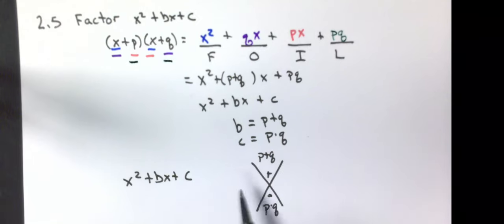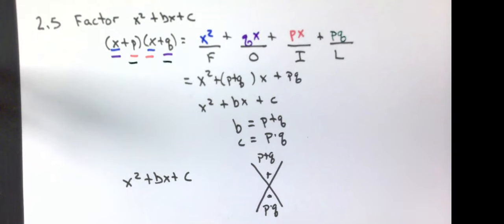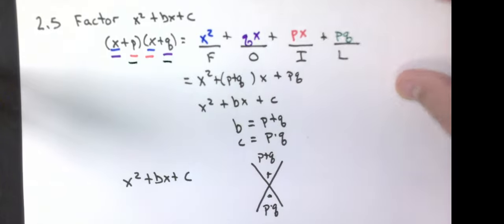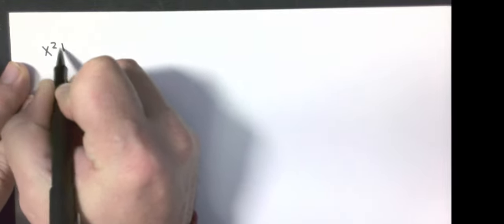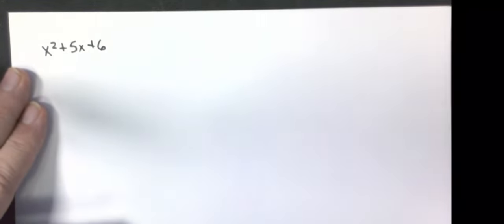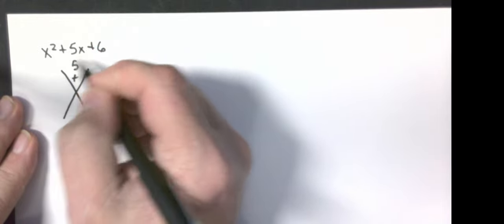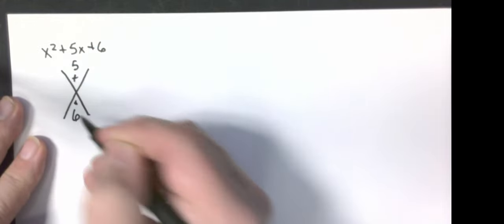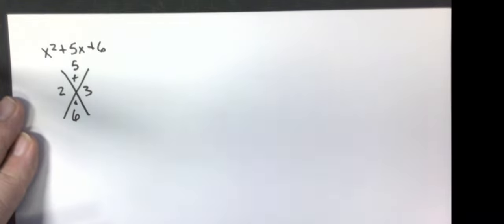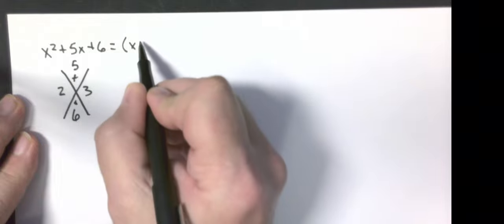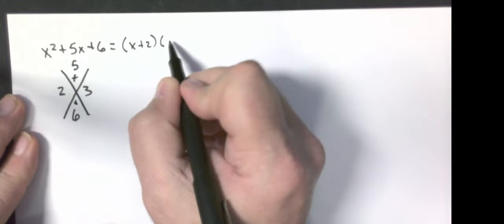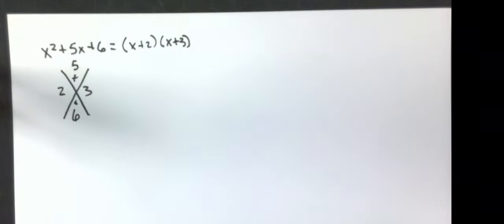I'm going to do about five or six examples. First example: x squared plus 5x plus 6. I want two numbers that add to 5 and multiply to 6 — that would be 2 and 3. So my answer here would be (x plus 2)(x plus 3), and we're done.